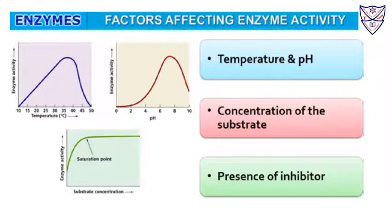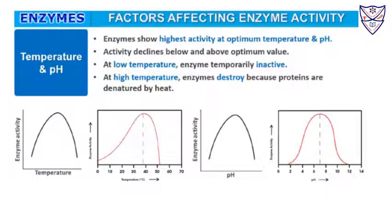There are various factors which affect enzyme activity: temperature and pH, the concentration of substrate present, and the presence of inhibitors. Enzymes show highest activity at something called optimum temperature — the best temperature and pH at which the enzyme works. Below this, activity declines. At low temperature, enzymes are inactive because there is no energy to bind with the substrate. At higher temperatures, enzymes are destroyed because proteins denature at high temperature, so the active site gets destroyed and the substrate cannot bind.